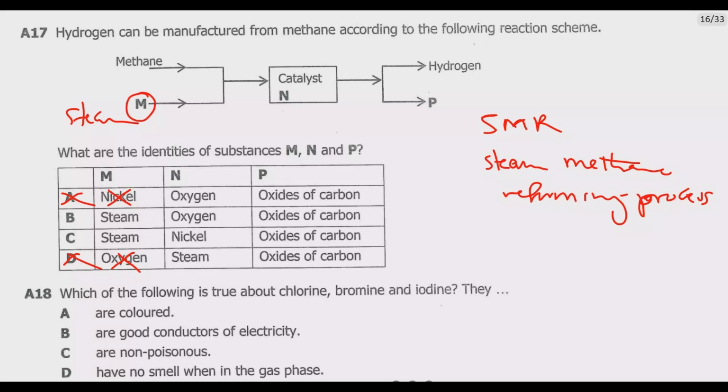Then between B and C, which one is correct? What is the catalyst? This is heated to a high temperature of between 700 to 1100 degrees in the presence of nickel as a catalyst. The catalyst is not oxygen, it's nickel. So you're left with option C.